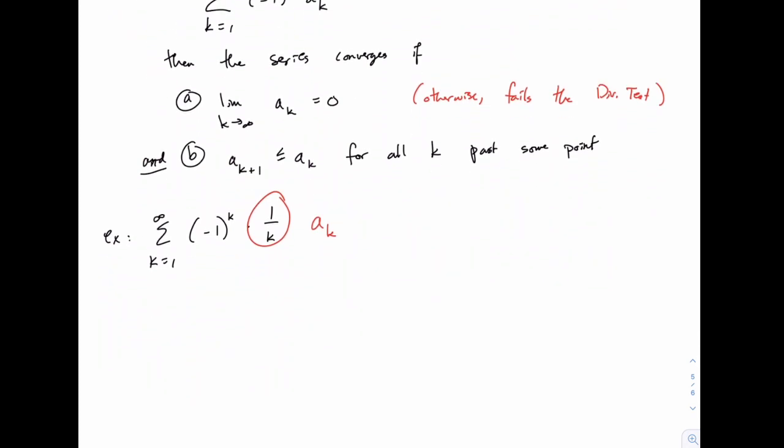So here we pick out that a_k is just the 1/k part. We need to test these two conclusions by taking the limit as k goes to infinity of just that part, not including the (-1)^k. And of course that does equal zero, so that passes that test.